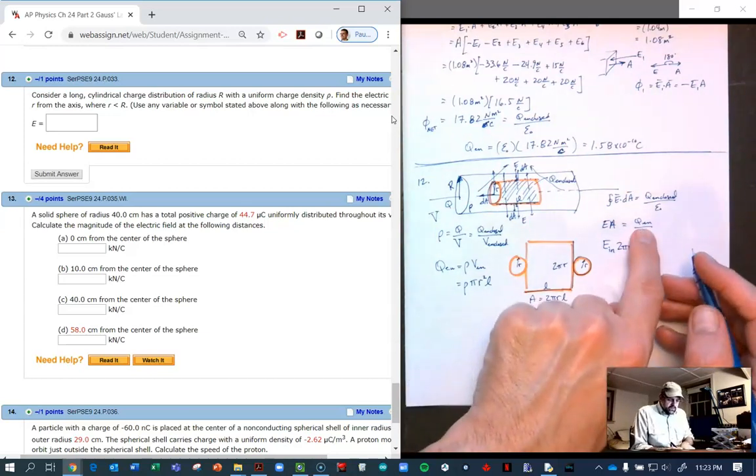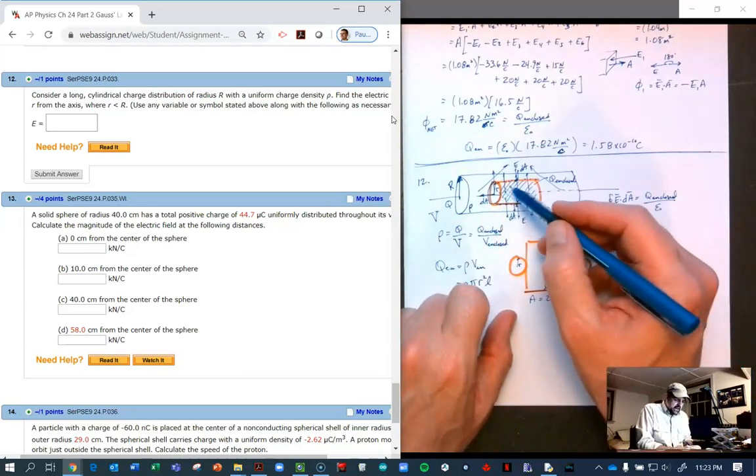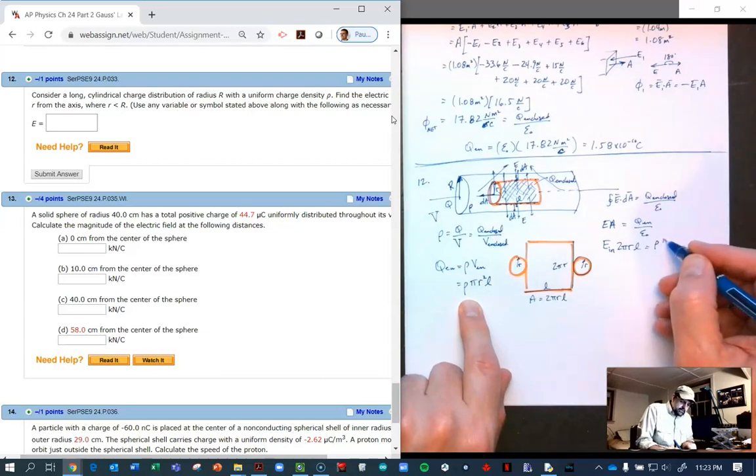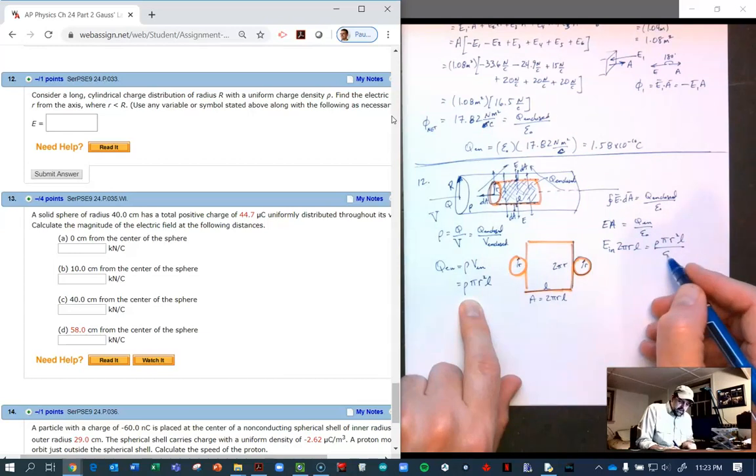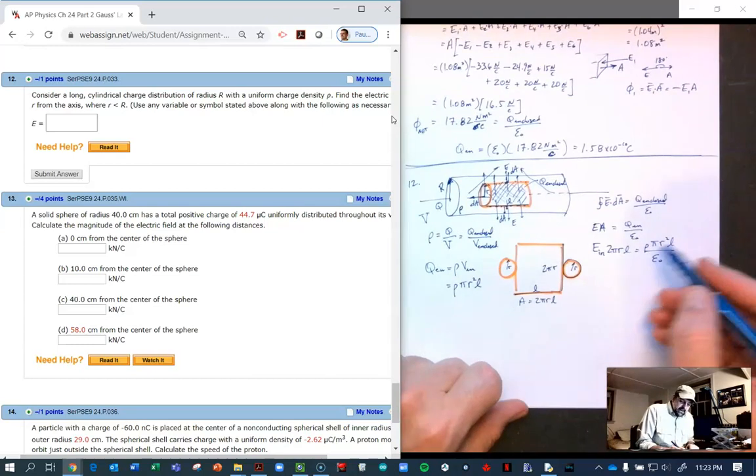We've already done that calculation, and don't forget the epsilon naught. Now we can just start canceling out. The π's go away, the L's go away, one of the r's goes away.